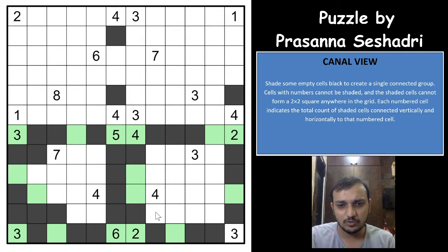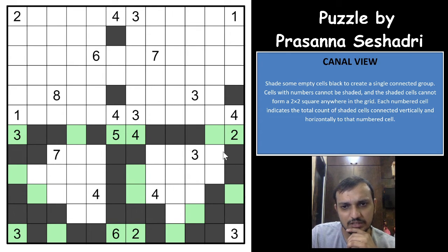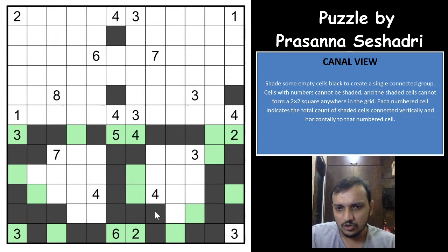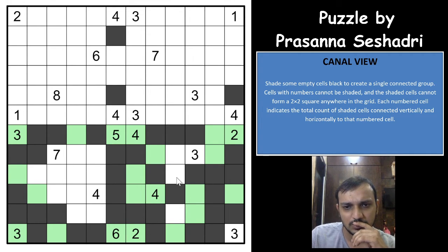This shaded cell would have to come out this way, and this shaded cell would have to come out this way. This would have to be unshaded because of the 2×2 group rule, so this has to come out this way. For the 4, 2 cells are already shaded, you need 2 more. You cannot have 2 cells here — that would be 3. You cannot have 2 cells in the other direction either. Which means both areas will have 1 cell each. The 4 is also done. The 3 will come out this way.